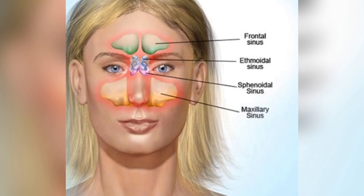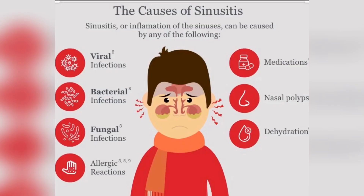Two are in your forehead region, called the frontal sinuses. In your eye region, two to the back called the sphenoid sinuses, two to the front called the ethmoid sinuses, and two below your eyes called your maxillary sinuses. Now, what are the causes of sinusitis? Usually your sinuses are filled with air, but they can become blocked.